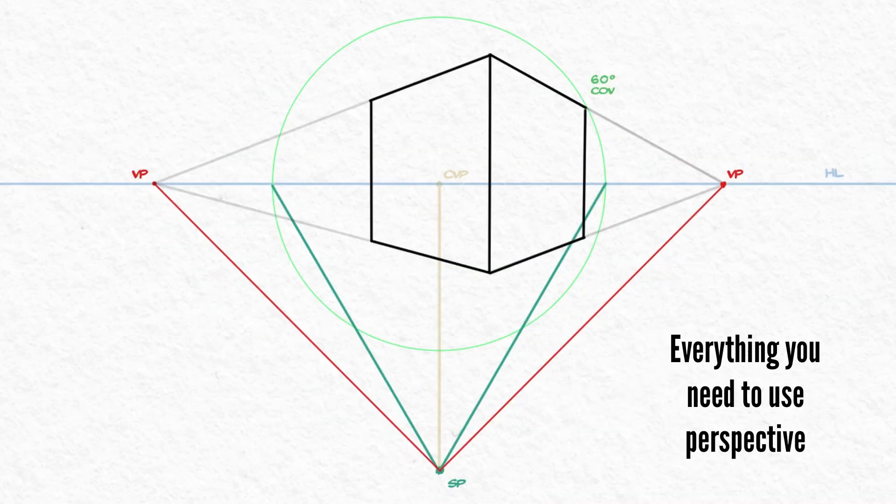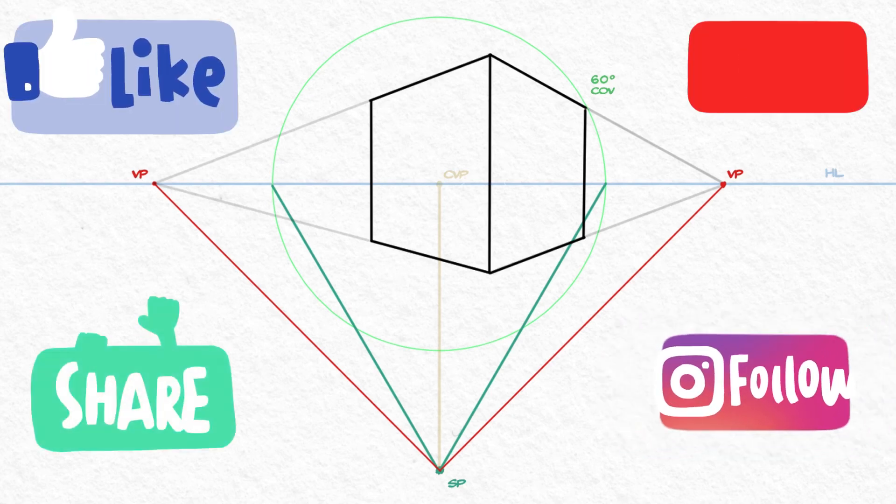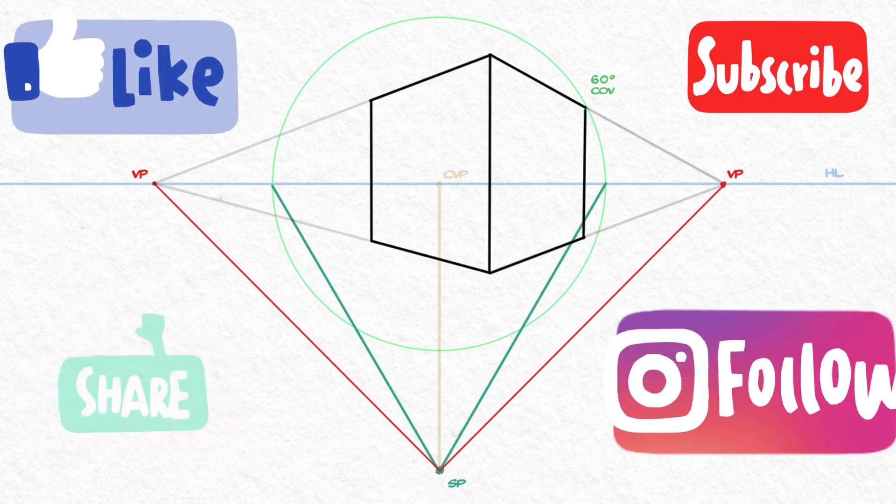There you have it. Everything you need to use perspective like a champ, accurate perspective points, and a cone of vision that keeps you from getting things too distorted. It only gets better from here, so be sure to click and subscribe, and I will see you soon.